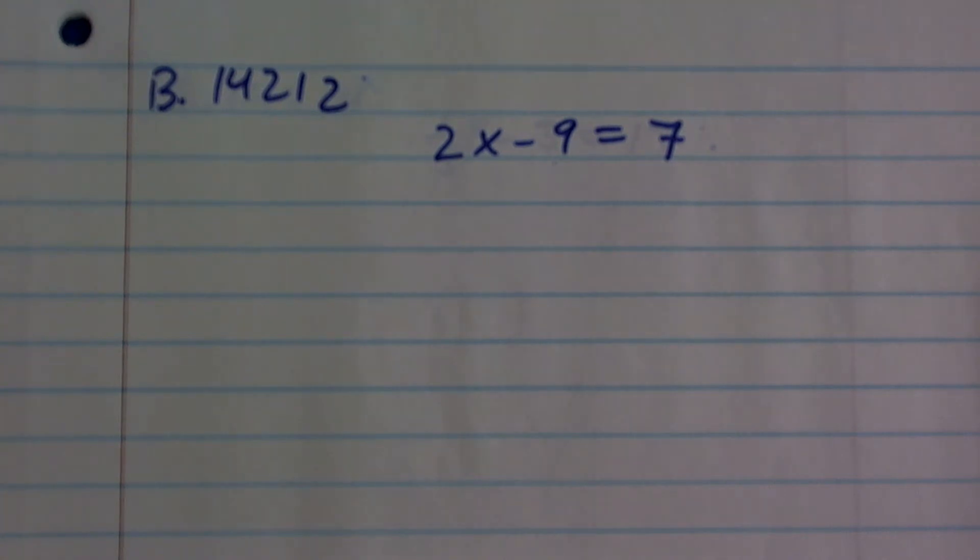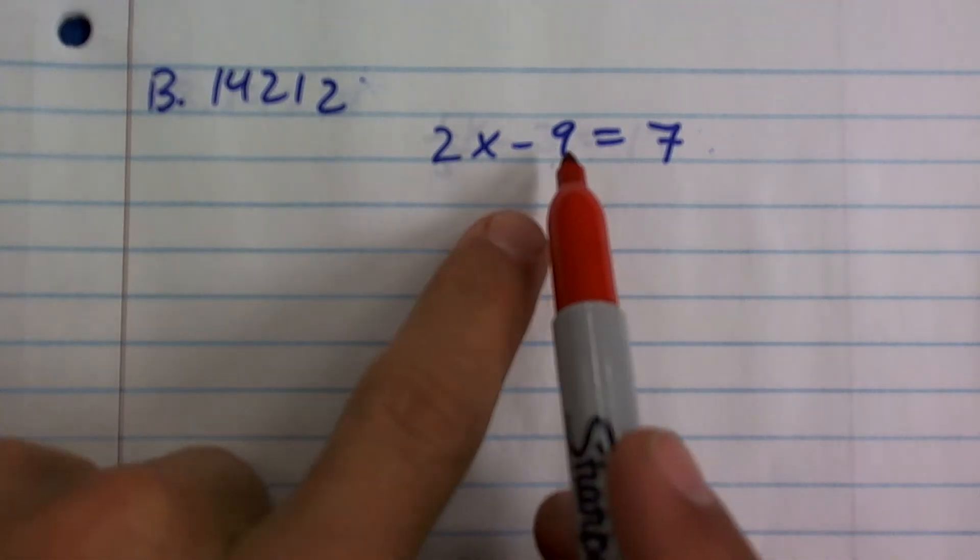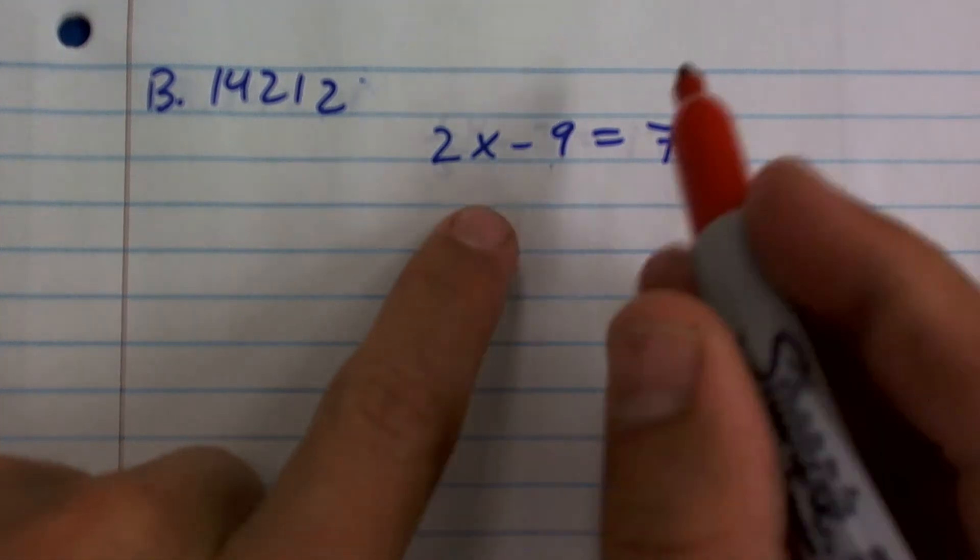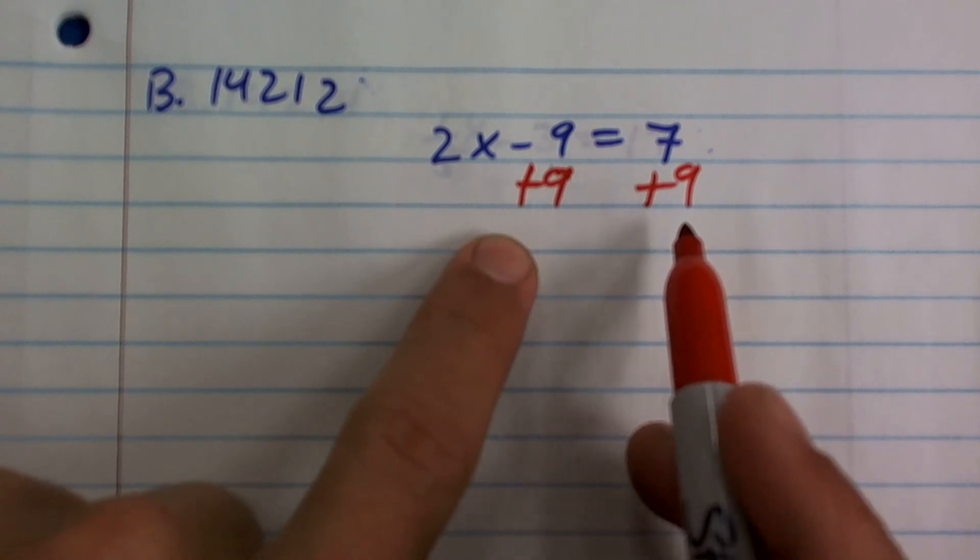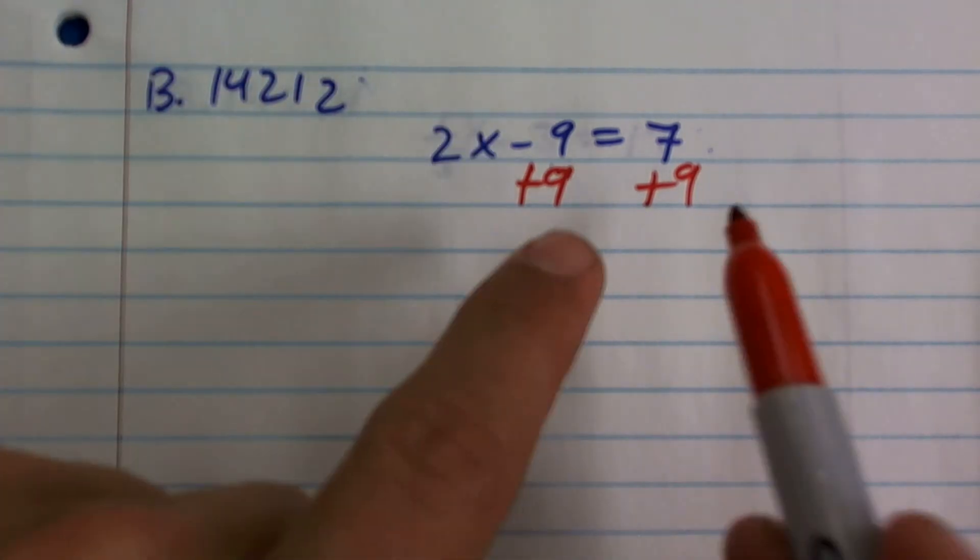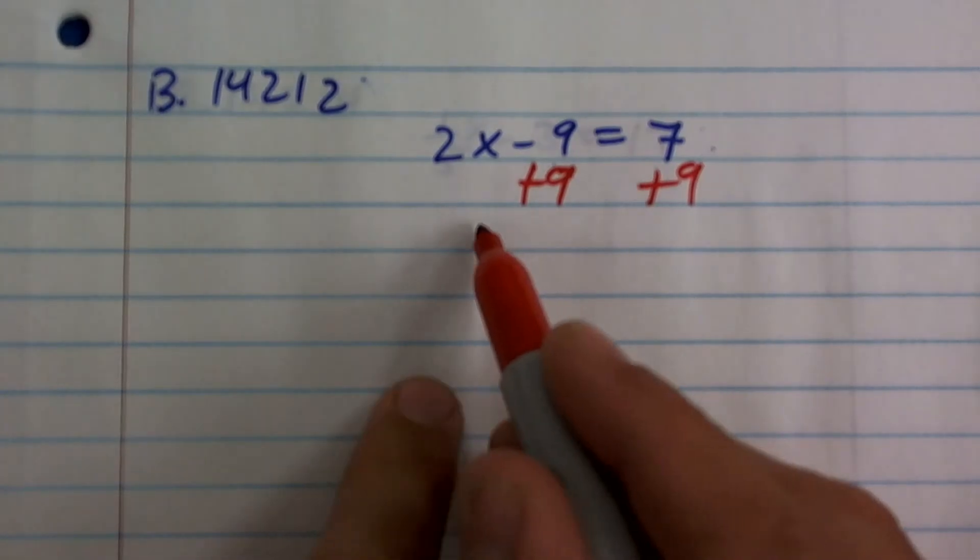To do that, I have my variable being subtracted by 9, so I'm going to add 9 on both sides of the equal sign. That's called my addition property of equality, and we have to make sure we add on both sides to keep these equations equivalent.